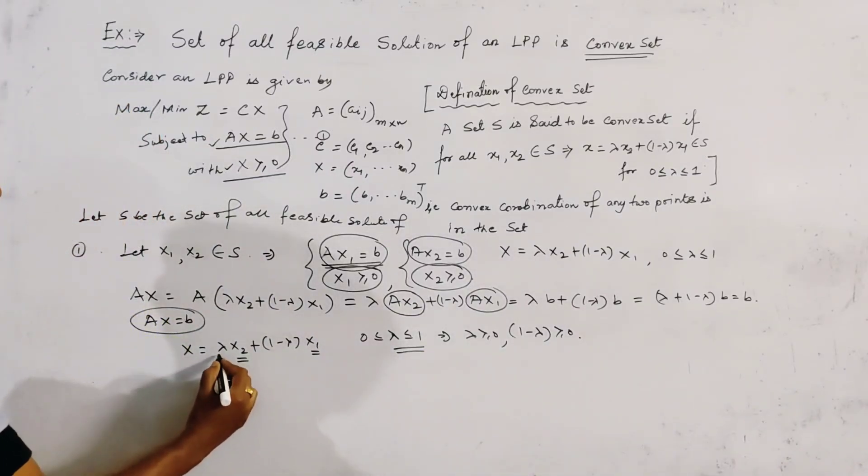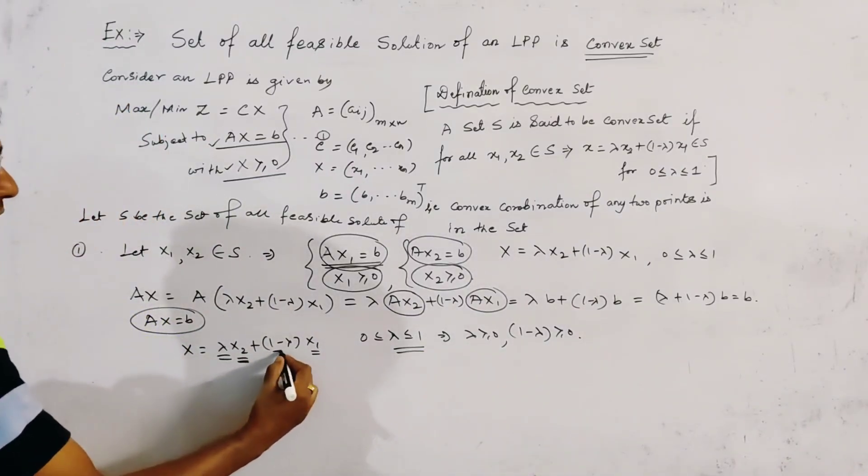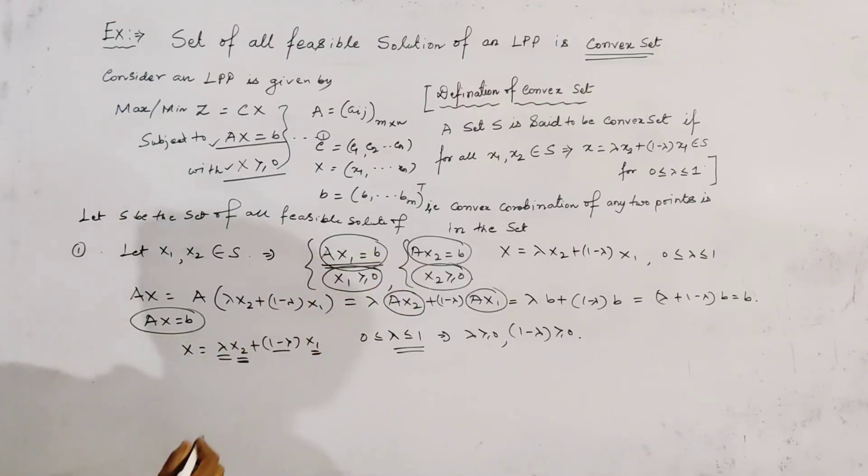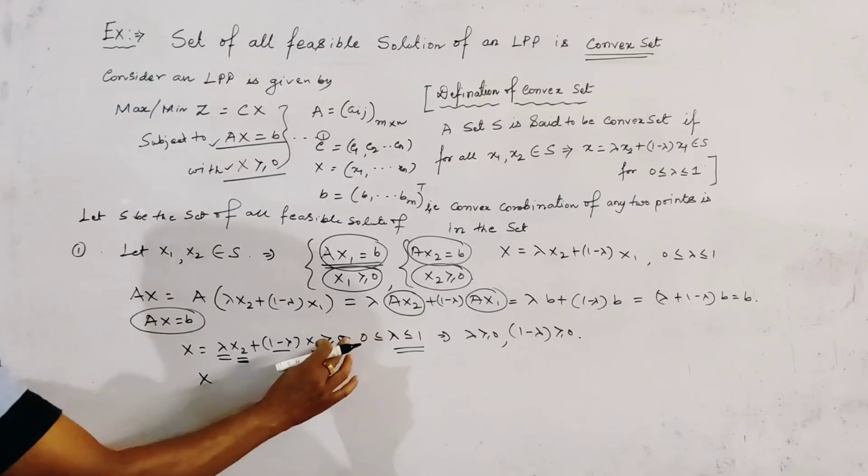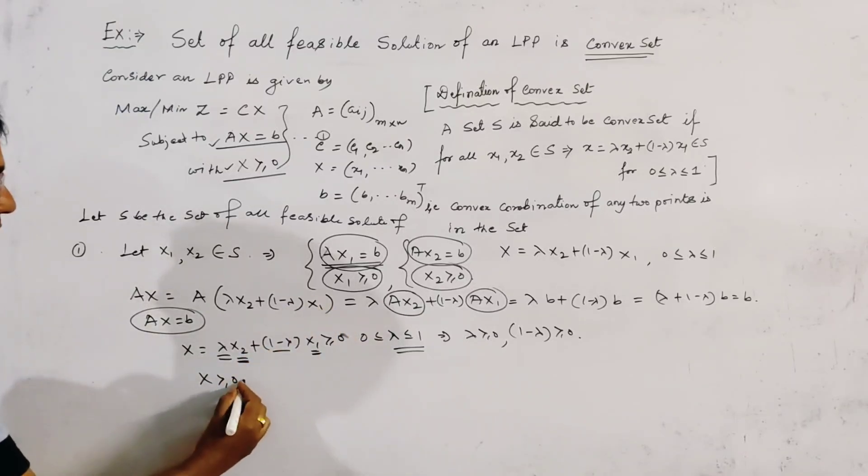So, all the components, lambda, X2, 1 minus lambda, X1, all are equal to 0. So, we can write, X, this is equal to 0. So, X, equal to 0. Hence,